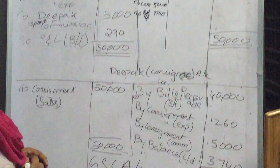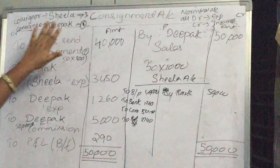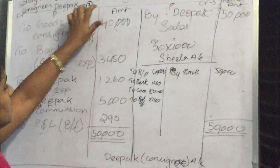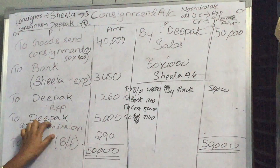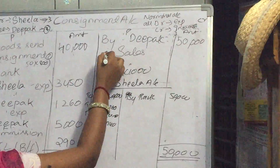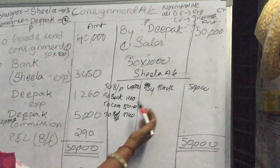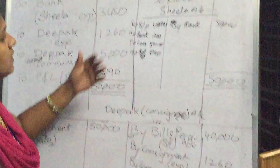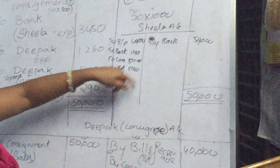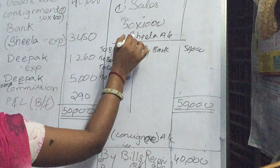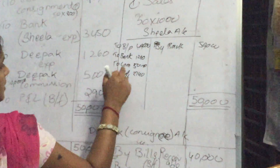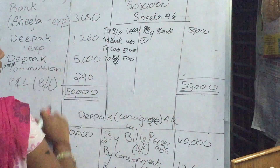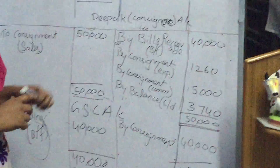These are the ledger accounts in the books of the consignor and consignee. When writing journal entries it is the same — if it is debit side, consignment comes first; if it is credit side, the other account comes next. Consignment account includes: goods sent on consignment, consignment account to bank, consignment account to Deepak expenses, consignment account to commission. Next, Deepak sales account debit to consignment account. For journal entries in the books of Sheila, you should write all these entries. Then journal entries in the books of Deepak: Sheila account debit to bills payable, Sheila account to bank, Sheila account to commission, Sheila account to balance carried down. If it is credit side, bank account debit to Sheila account.